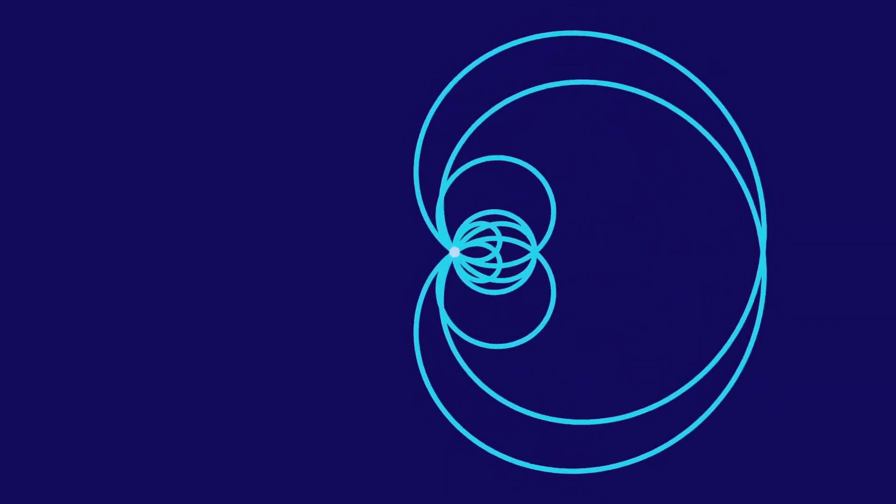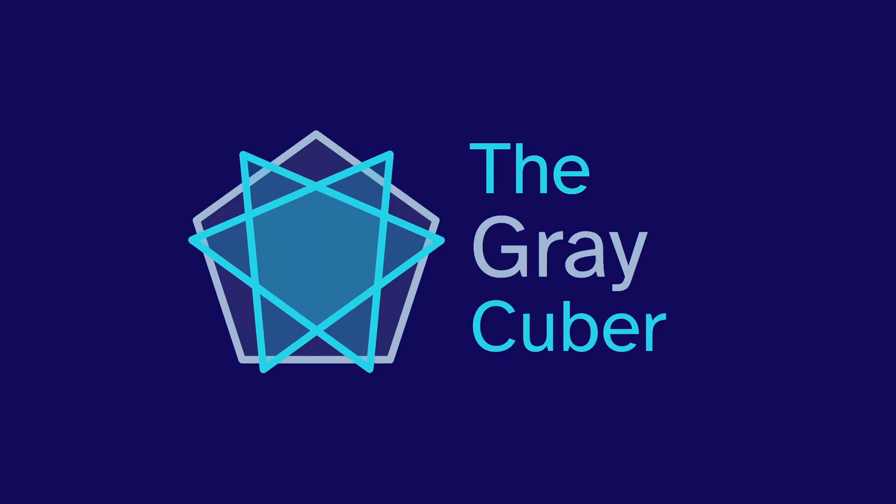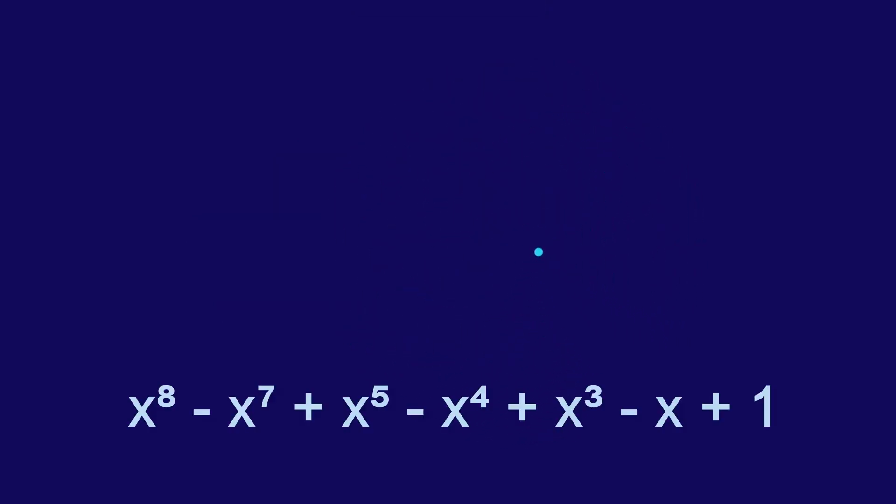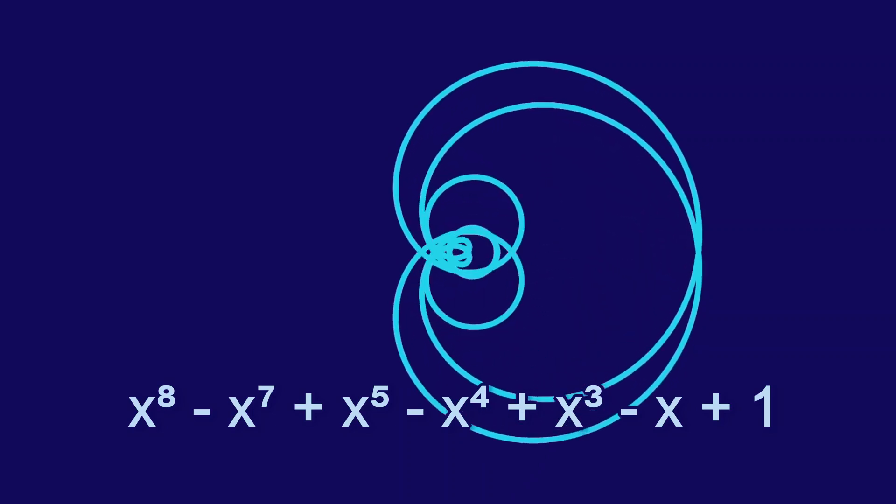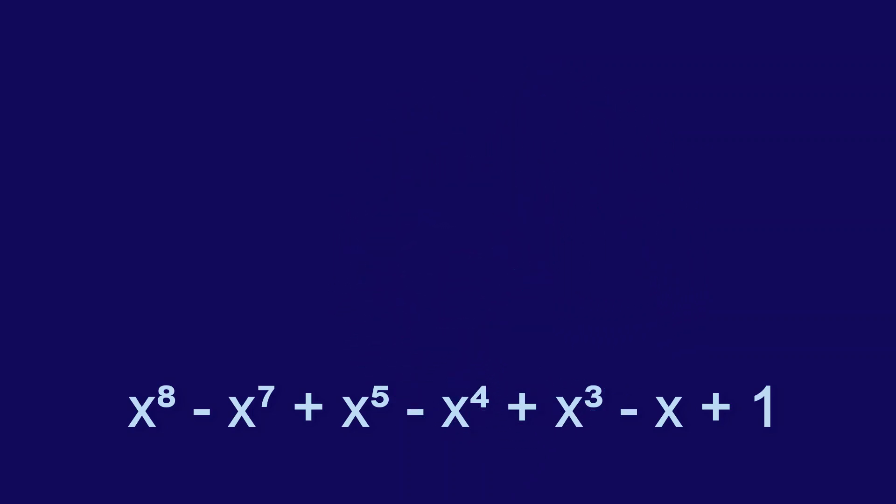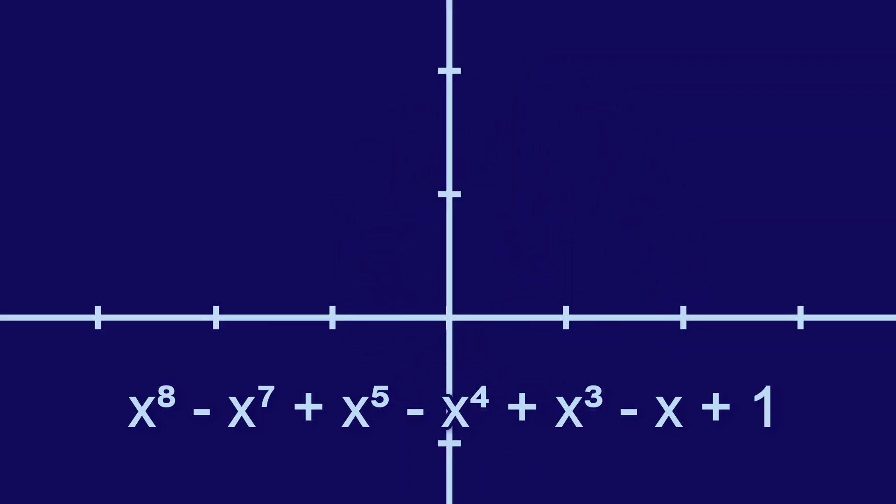To understand how these graphs work, let's start here. This animation is a way to graph this polynomial. But why are we animating it? Can't we just graph it using an x and y axis, like normal?